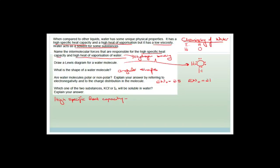I should have checked that — the electronegativity of oxygen is 3.5, not 2.5; 2.5 is carbon. The reason I knew that was because I know the water molecule is polar covalent, and it wouldn't have been polar covalent with 2.5 and 2.1. The difference between O (3.5) and H (2.1) gives you 1.4, which means this is polar covalent.